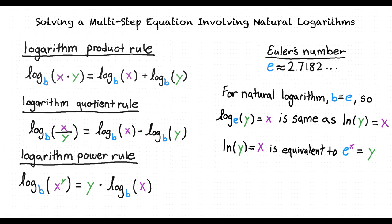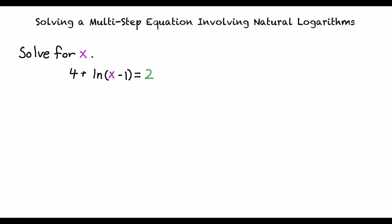Now, let's try out an example problem. Here, we have a problem asking us to solve for x given the equation 4 plus ln of x minus 1 is equal to 2. How do we go about solving this problem?